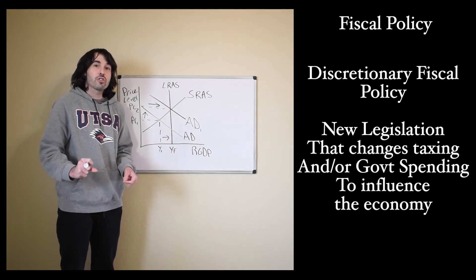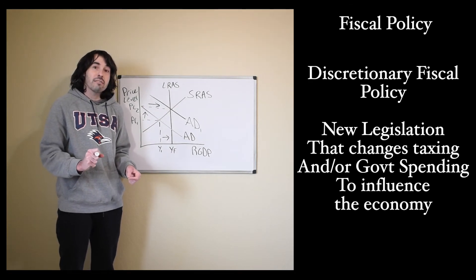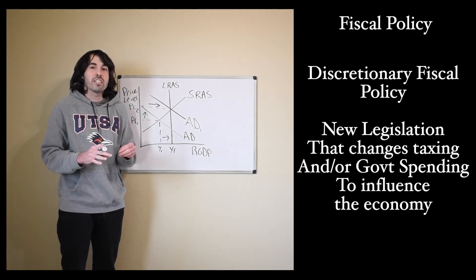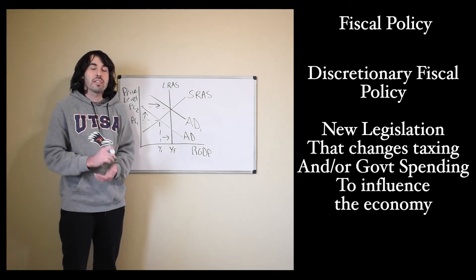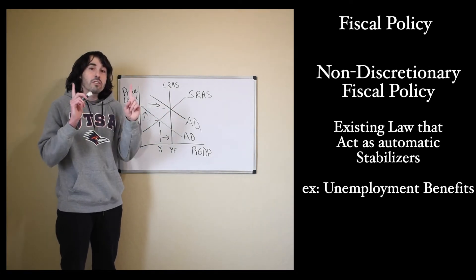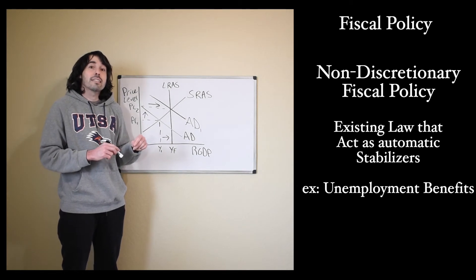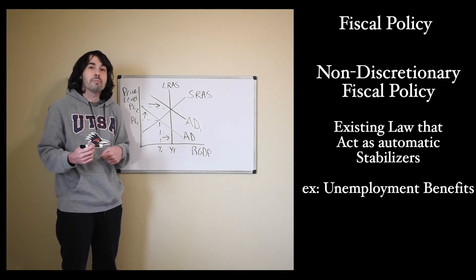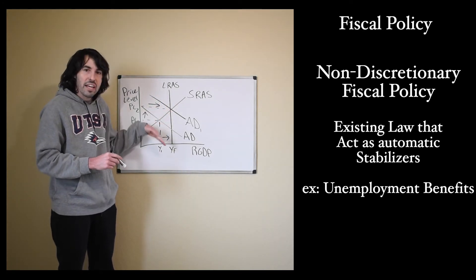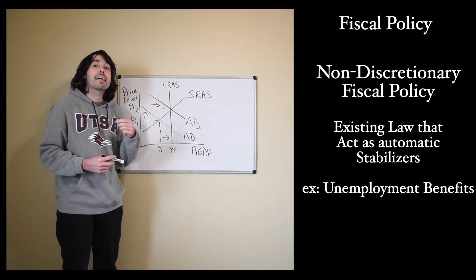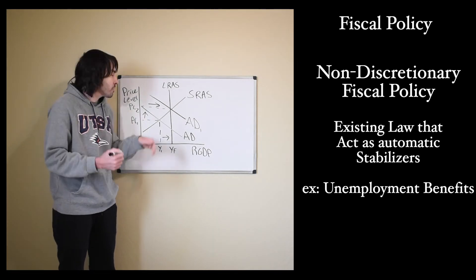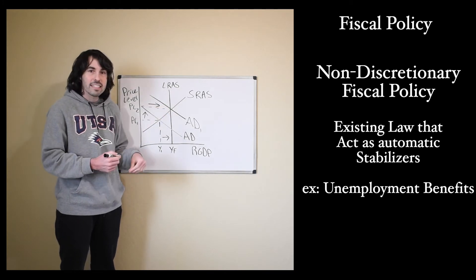What I just described is discretionary fiscal policy that the government did in order to close this output gap. Non-discretionary would be automatic stabilizers, things like unemployment benefits. When we go into a recession, transfer payments are going to increase, because unemployment benefits are going to be increasing. They're called automatic stabilizers, because now that the unemployment rate increases, people are automatically going to start qualifying for unemployment benefits. They get that money, they start spending, aggregate demand can start fixing this gap.